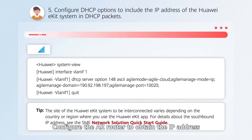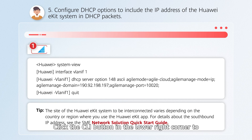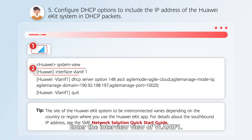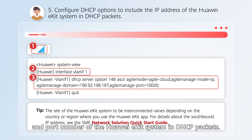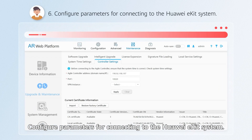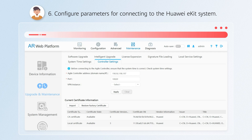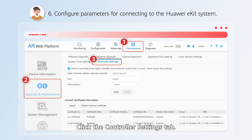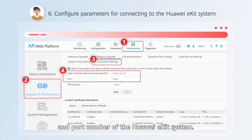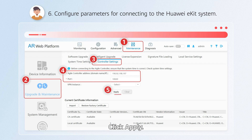Configure the AR router to obtain the IP address of the Huawei eKit system for downstream devices. Click the CLI button in the lower right corner to open the CLI configuration page. Enter the interface view of VLAN IF 1 and configure DHCP options to include the IP address and port number of the Huawei eKit system in DHCP packets. Then choose Maintenance > Upgrade and Maintenance, click the Controller Settings tab, enter the southbound IP address and port number of the Huawei eKit system, click Apply, and click Save to save all configurations.